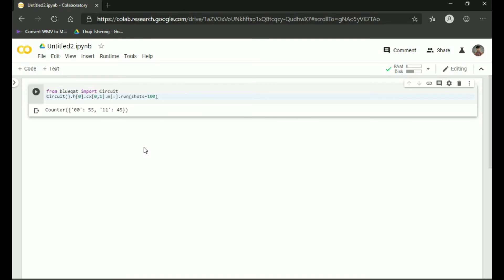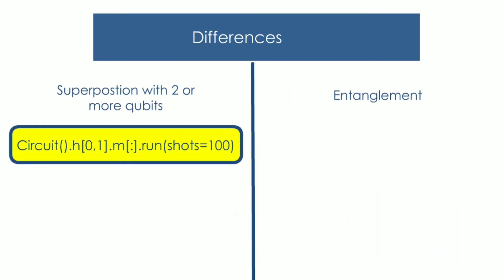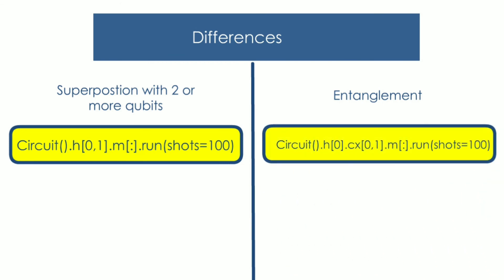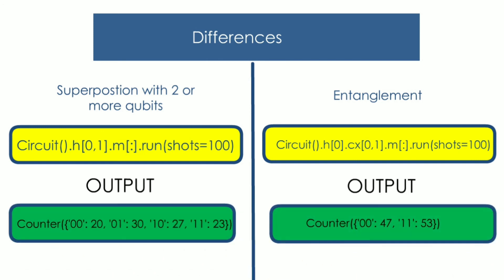A lower number of combinations means faster will be the process. Using entanglement there are only a few combinations of answers, but in superposition we had many combinations of answers. Lastly, let us look at the differences between superposition and entanglement of two qubits. We used the H gate in superposition, but in entanglement we used the H gate and CX gate. The output for superposition had four combinations, and the output for entanglement had only two combinations of answers.